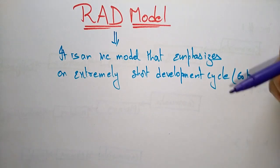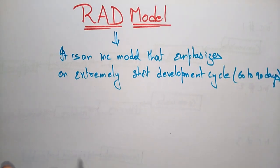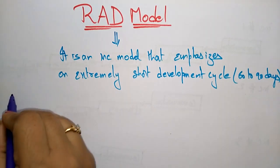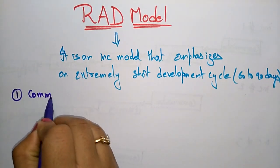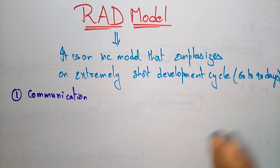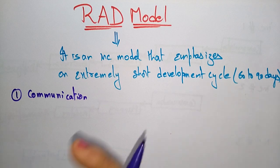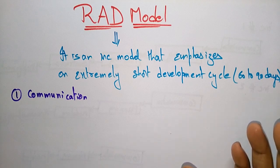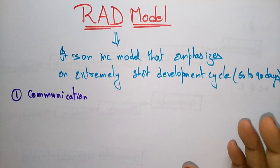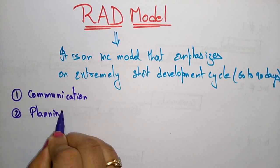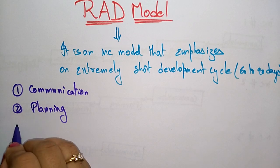Now let us see what are the phases present in the RAD model. The first phase is Communication. In the communication phase, the user, customer, and developers are interacting with each other so that the customer can give the requirements to the developer. The customer or user gives the requirements to the developer so the developer can develop the project. That is done in the communication stage.